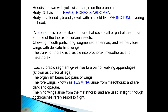The cockroach is reddish-brown with a yellowish margin on the pronotum, which is a plate-like structure covering all or part of the dorsal surface of the thorax. The body has three divisions: head, thorax, and abdomen. The body is flattened and broadly oval, with a shield-like pronotum covering the head. It has chewing mouthparts, long segmented antennae, and leathery forewings with delicate hindwings.